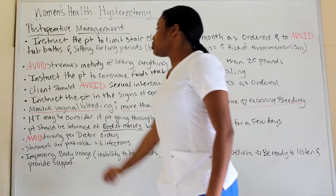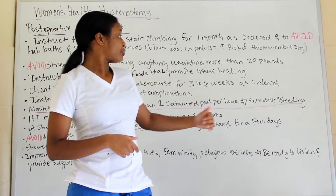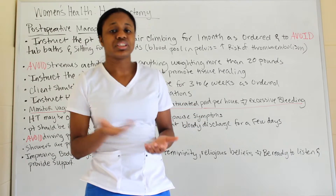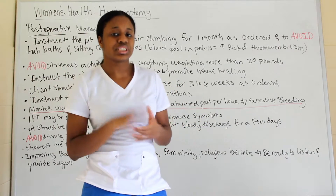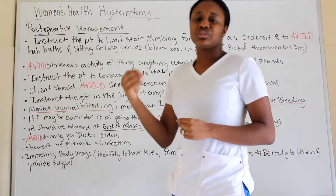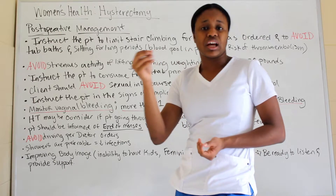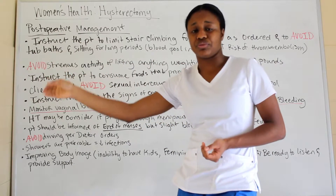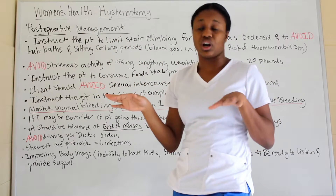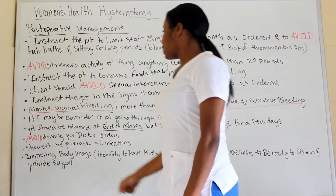Instruct the patient to avoid sexual activity for at least three to six weeks per doctor's orders — the timeframe varies by patient. This may come up as a teaching question, such as 'which statement shows the patient had adequate teaching?' If the patient says they can have sex after two weeks, that is incorrect. Watch out for those 'avoid' items.